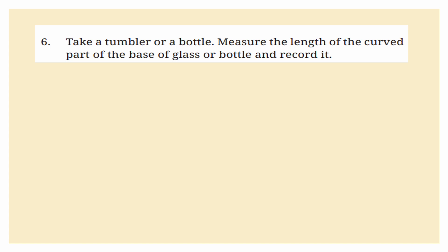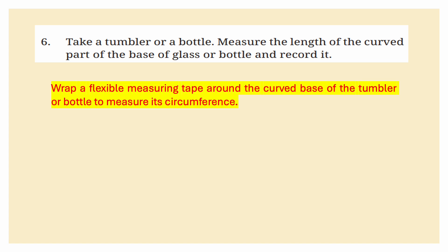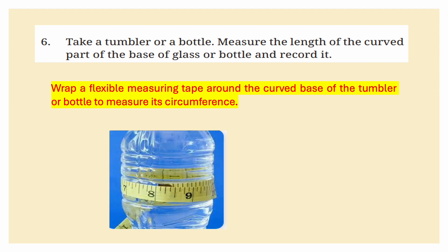Take a tumbler or a bottle. Measure the length of the curved part of the base by wrapping a flexible measuring tape around the curved base of the tumbler or bottle to measure its circumference. Here, the circumference measures around 8 centimeters.